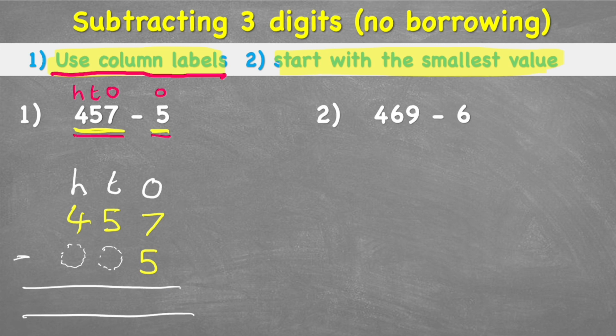Now we can look at step two which said start with our smallest value, and our smallest value is our ones. Ones are smaller than tens and are smaller than hundreds. So looking at my ones column, I have seven subtract five. So if I have seven, one, two, three, four, five, six, seven—let's say I've got my seven counters, and I subtract five: one, two, three, four, five.